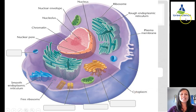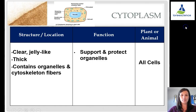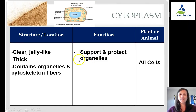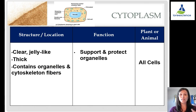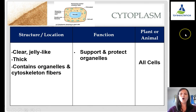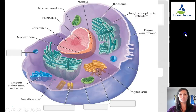The cytoplasm is a clear, jelly-like substance that is relatively thick and contains organelles and cytoskeleton fibers. Its job is to support the cell so it doesn't collapse on itself and to protect the organelles as different molecules move around. All cells have cytoplasm.